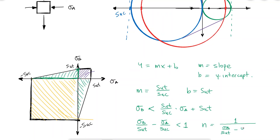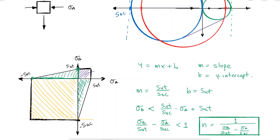Note that this derivation assumes σB is greater than σA. If σA is greater than σB, the same factor of safety equation applies with σA in the first fraction and σB in the second. Since what we compare to the ultimate tensile strength is always the positive principal stress, and what we compare to the ultimate compressive strength is always the negative principal stress, it doesn't matter what we label as σA and σB.